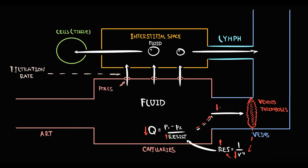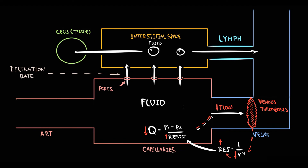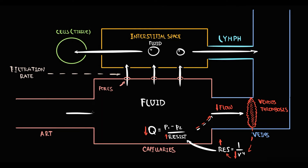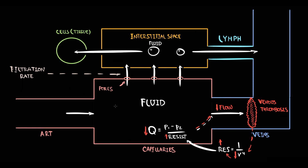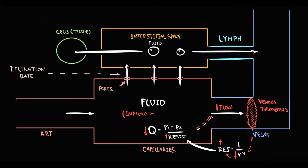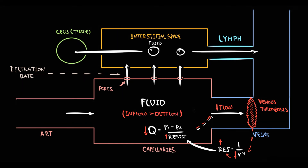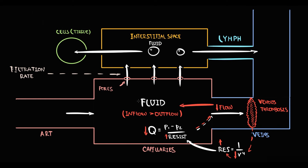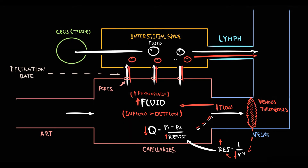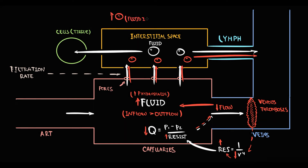With thrombosis, less blood flows into the vein, but the amount delivered by the arteries remains the same since cardiac output is unaffected. So blood inflow to capillaries exceeds outflow, the volume of blood in capillaries increases, and hydrostatic pressure rises. The higher the capillary hydrostatic pressure, the more fluid enters the interstitial space. At some point, fluid income to the interstitial space exceeds lymphatic drainage, so fluid progressively accumulates in the interstitium, causing edema.